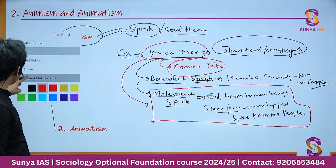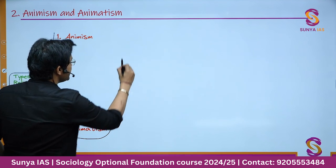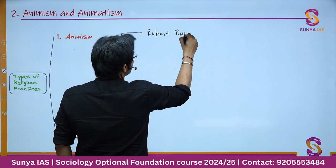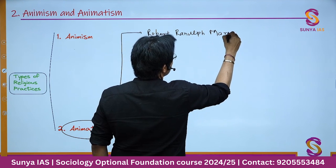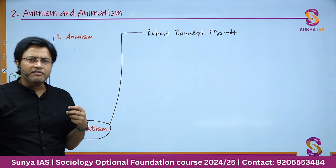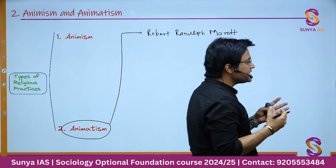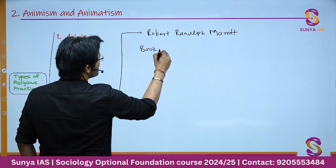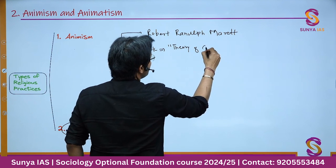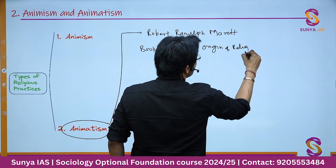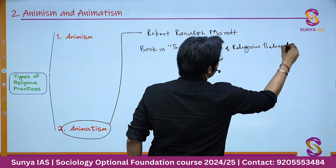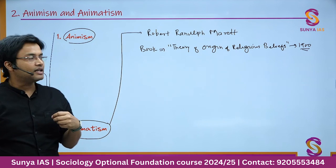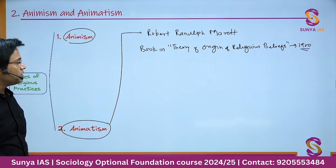Now let's talk about animatism. This terminology was coined by yet another very renowned anthropologist, Robert Ranulph Merritt, in his famous book 'Theory of Origin of Religious Beliefs' in 1900. So animism was coined by E.B. Tyler in 1875, while animatism was coined by R.R. Merritt in 1900.